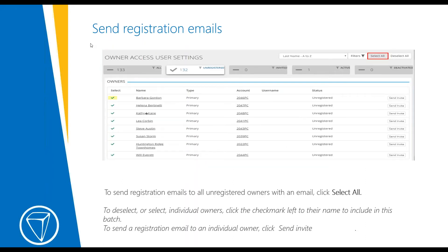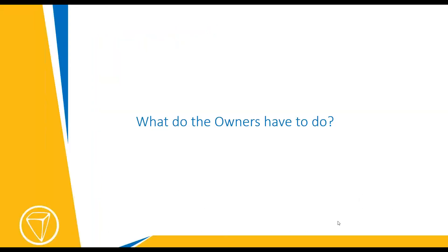It begins with you sending out the registration emails. This is how the page looks in your system when you select all — you also want to filter to get only the people that have email addresses, or it will give you an error. To send emails to all the unregistered owners with an email, you just click select all. If you want to do an individual one, you can simply go over and send the invite to an individual owner.